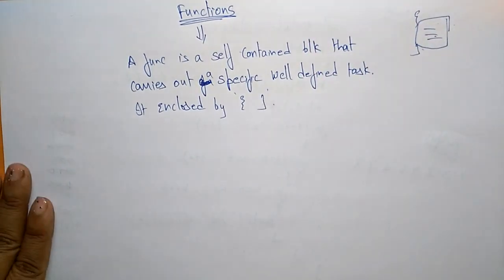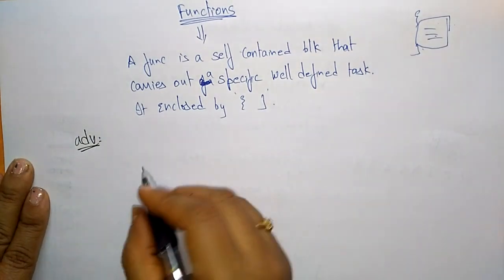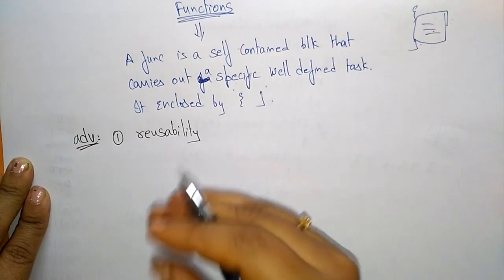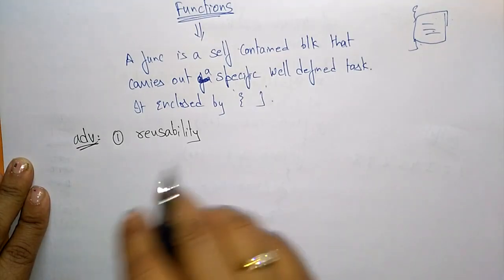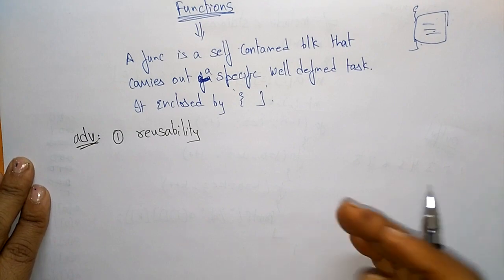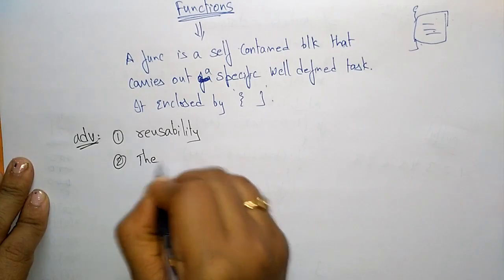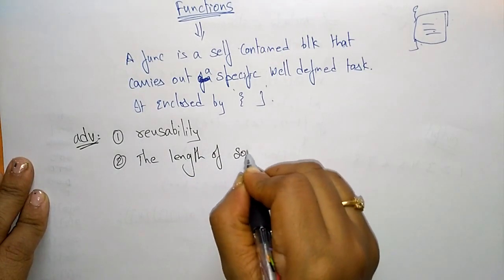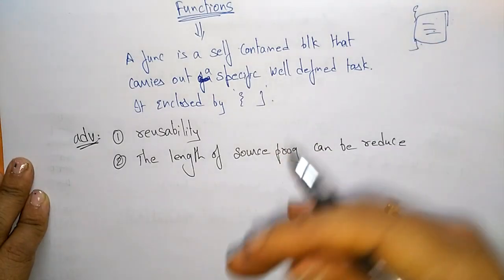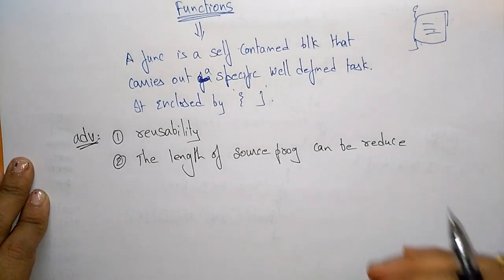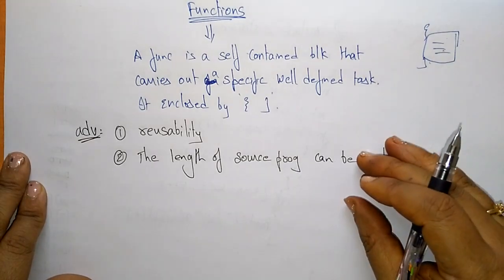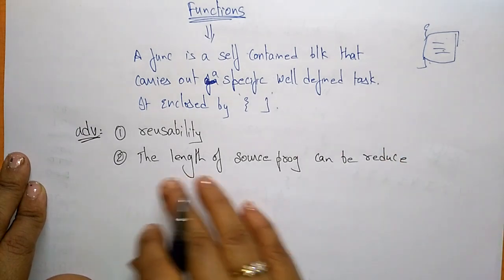The advantages of using functions: first is reusability, which means a function may be used by many other programmers. Once you declare a function, it can be called by many other programmers; you can save it in other files and library files. Another advantage is that the length of the source program can be reduced. Instead of writing the same code repeatedly, you write the function once and just call the function name.